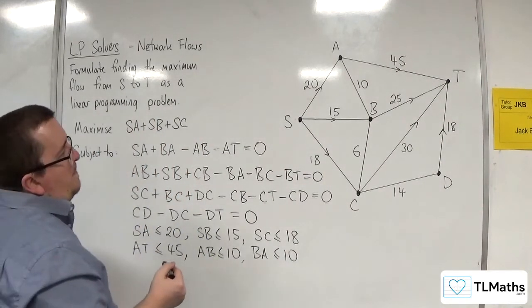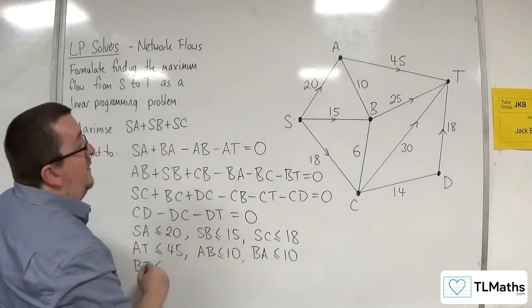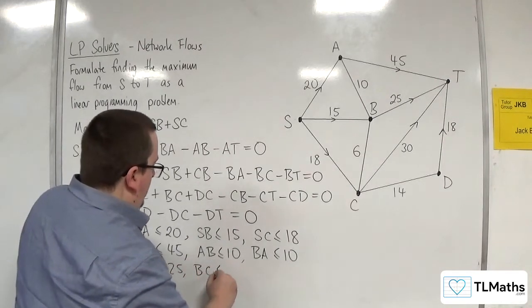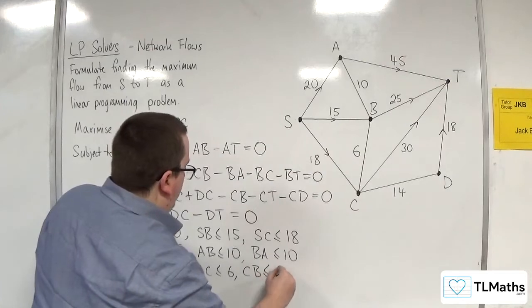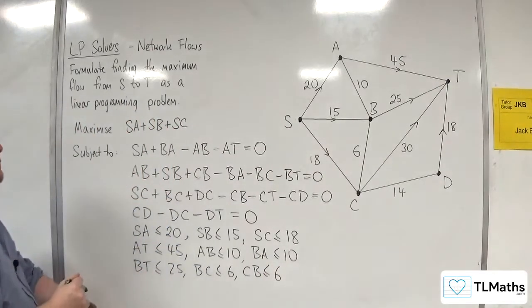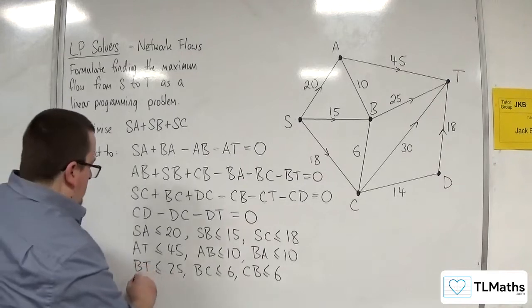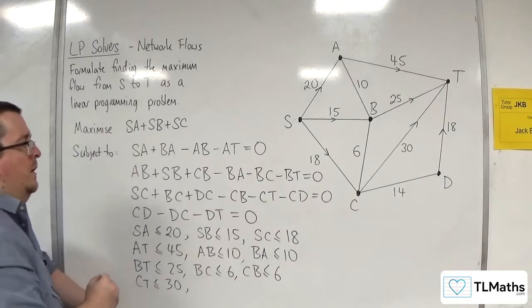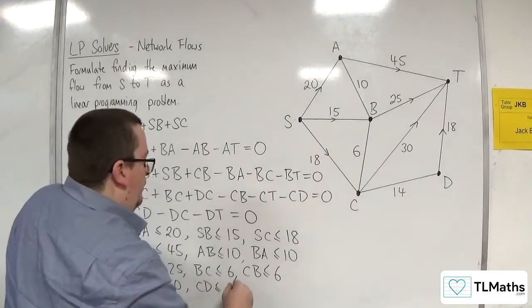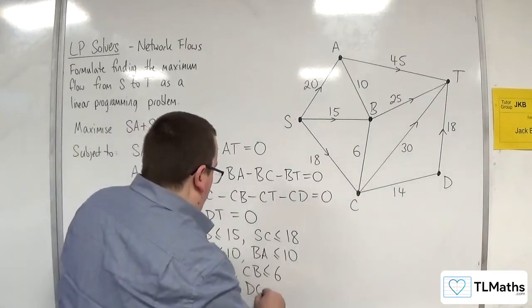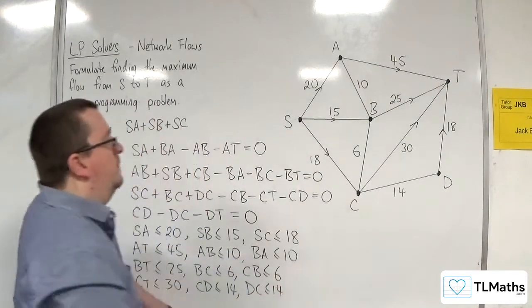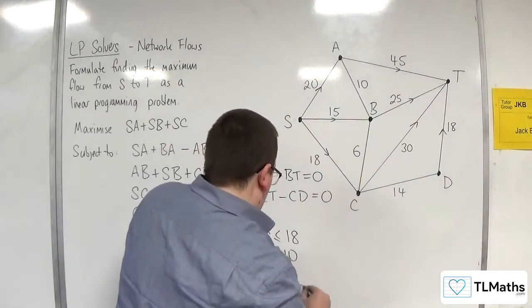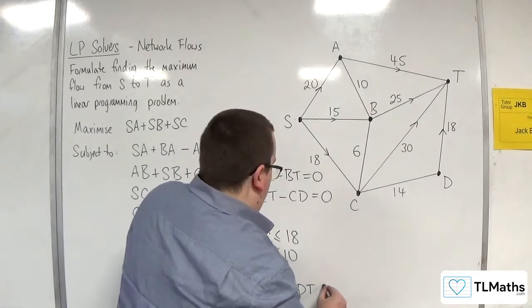We've got BT has got to be less than or equal to 25. BC has got to be less than or equal to 6. And CB has got to be less than or equal to 6. CT has got to be less than or equal to 30. CD has got to be less than or equal to 14. And DC has got to be less than or equal to 14. And then we've just got DT left, I think. So DT is less than or equal to 18.